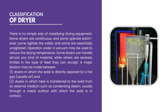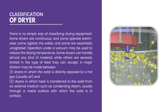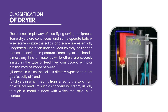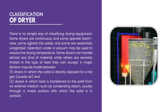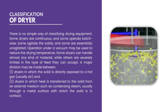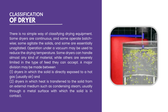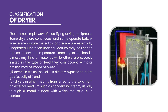Dryers can be further classified into two subcategories. The first is the dryer in which the solid is directly exposed to the hot gas, which is usually air. The second is a dryer in which heat is transferred to the solid from an external medium such as condensing steam, usually through a metal surface with which the solid is in contact.